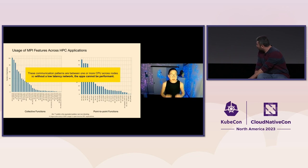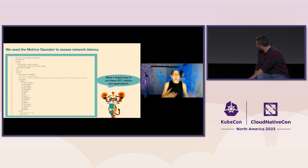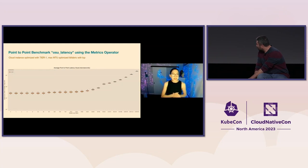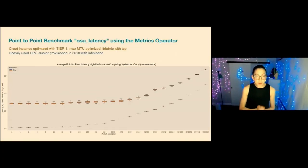I must stress that because of these communication patterns, without a low latency network, applications absolutely cannot be performant. The OSU benchmarks allow us to measure these through two things: OSU AllReduce for collective, and OSU latency for point-to-point. We used the metrics operator to create a metric set. Looking at OSU latency — a point-to-point benchmark — on cloud, we see latency in microseconds in log scale as a function of packet size. Comparing to HPC, which is orders of magnitude better — between 10 and 20 times, depending on where you are in the graph.